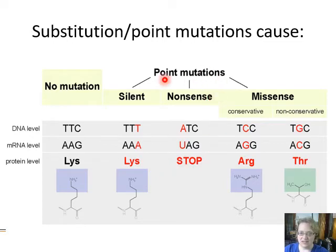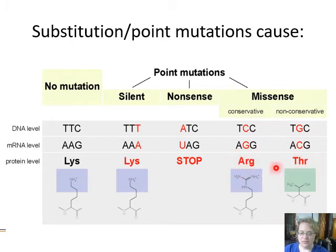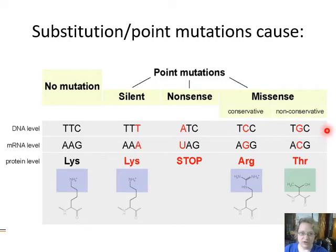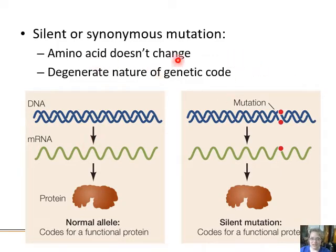A nonsense mutation is where you change the DNA and suddenly there is a stop codon where there shouldn't be. A missense mutation is where you change the amino acid due to the mutation. There are two types: a conservative missense mutation replaces the amino acid with something very similar, likely having little effect; a non-conservative missense replaces it with something totally different — switching polar for non-polar or positively charged for negatively charged — which has a big effect on protein structure.